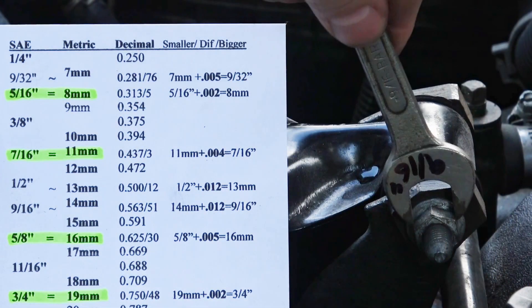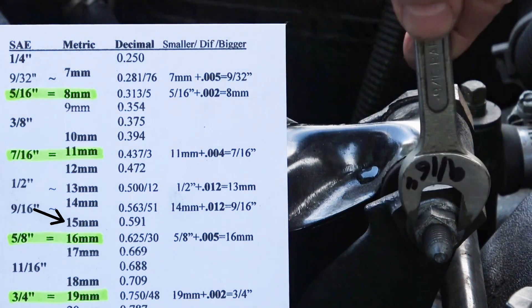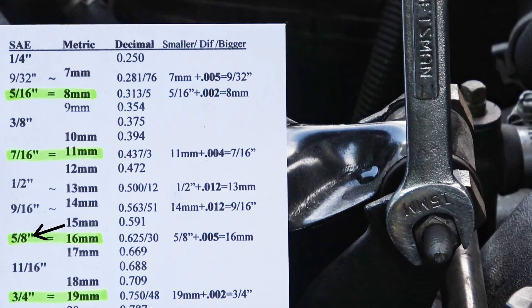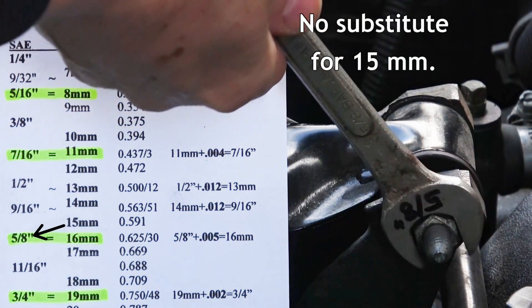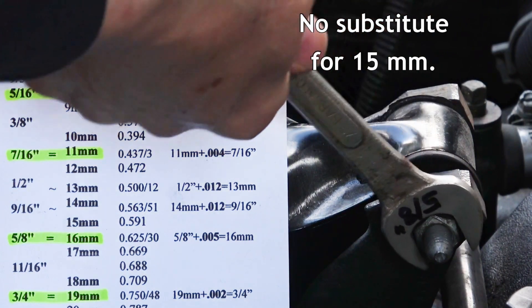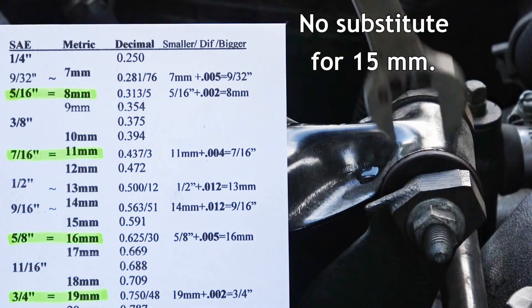A 9 sixteenths inch is too small for this nut on our engine mount. The next size up is a 15 millimeter, a very common size. The 5 eighths is way too loose. You'd strip the nut before you got it off, so there's no substitute for a 15 millimeter.